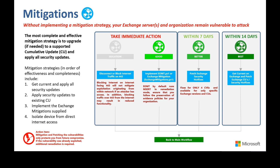Isolation: blocking incoming internet traffic over port 443 will mitigate against these threats, but only for traffic coming from the internet. For traffic coming from inside your network, the vulnerabilities are still exploitable. If an attacker had already established a presence inside your network, your Exchange servers are still vulnerable to attack.